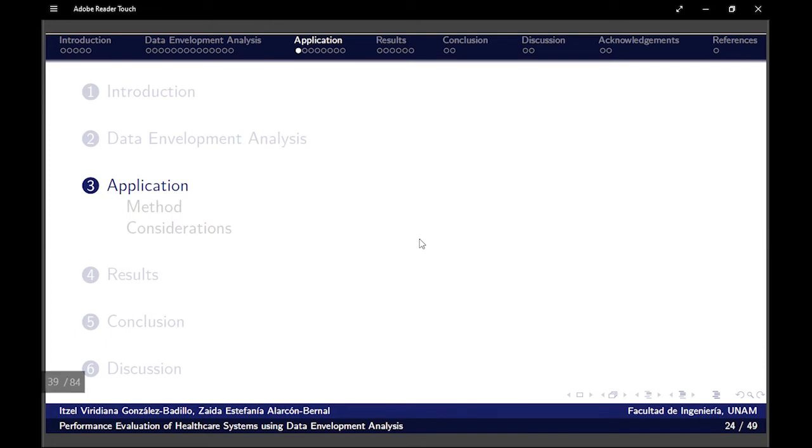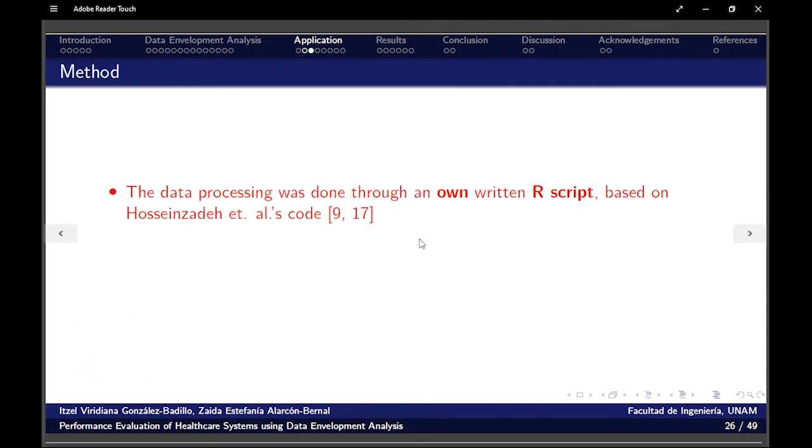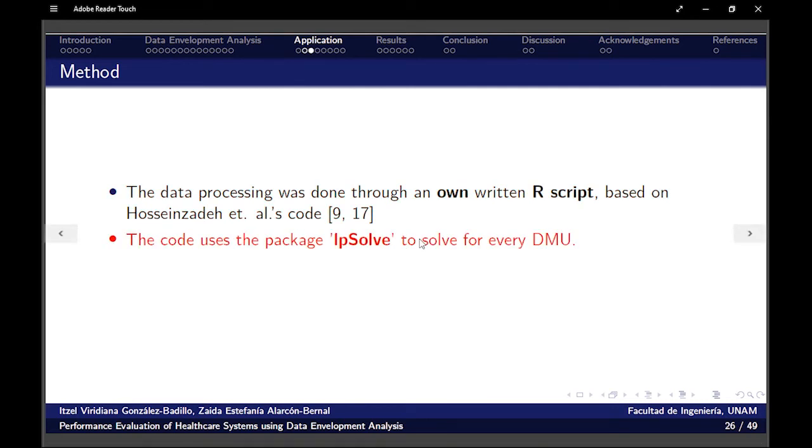Now, what do we do for the performance evaluation of healthcare systems? Well, first method. The data processing was done through an R script. It was based on some data already existing. The code uses the package lpsolve for every DMU. So it is in a for loop that will execute lpsolve n times. And the script results were also verified with the R package DEA.